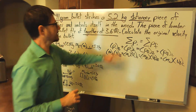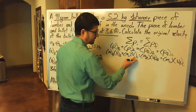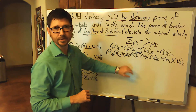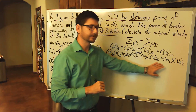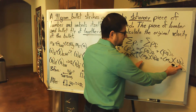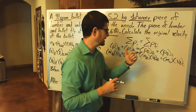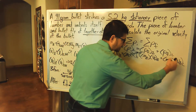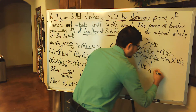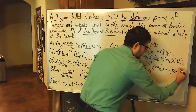The problem tells us that the piece of lumber is stationary initially, so the initial velocity of the lumber is zero — we can immediately get rid of that term. Now I want to focus on the right-hand side of the equal sign. Since the final velocity of the lumber and the bullet are the same, we can factor that velocity out. So it's going to look like: the final velocity multiplied by the quantity (mass of the bullet plus mass of the lumber).